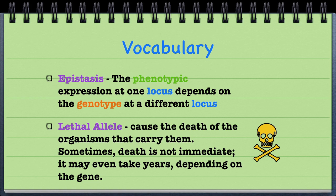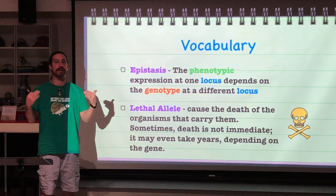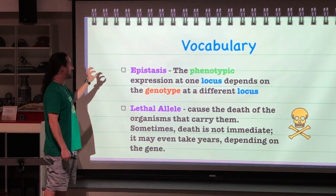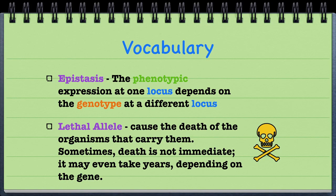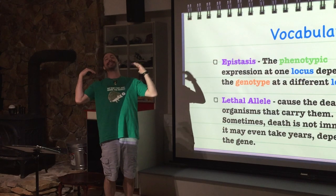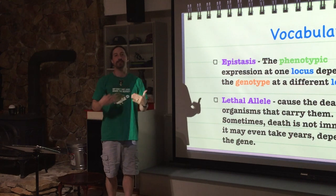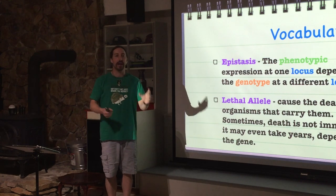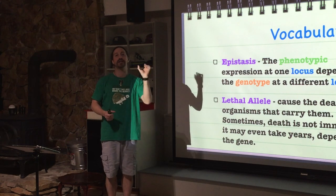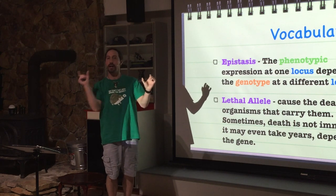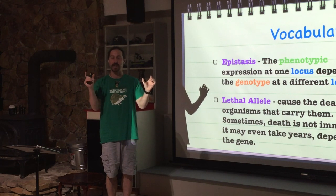We have to understand what epistasis is. Epistasis is when the phenotypic expression at one locus depends on the genotype at a different locus. It means that the way one gene is going to be expressed depends on how another gene is going to be expressed.